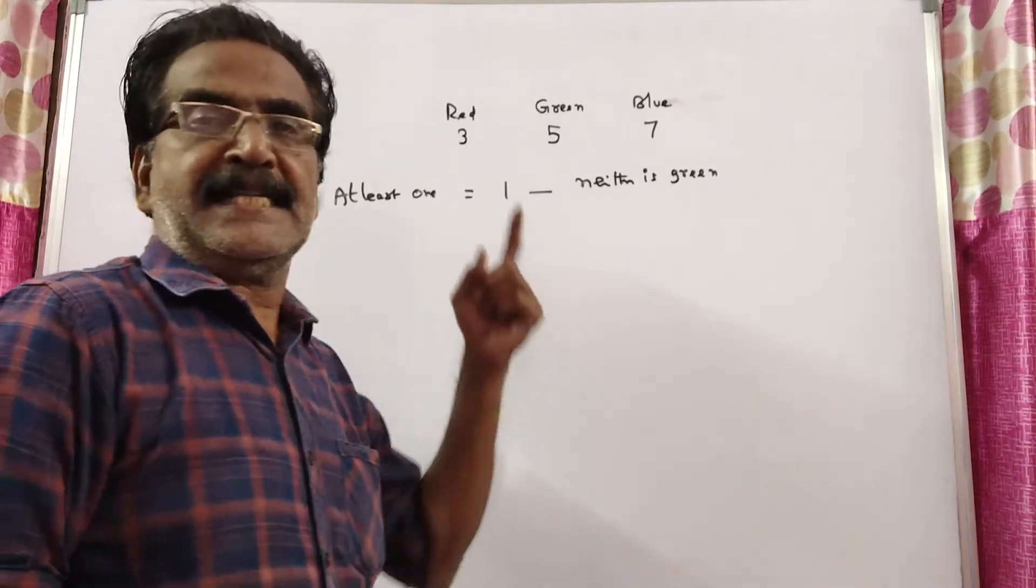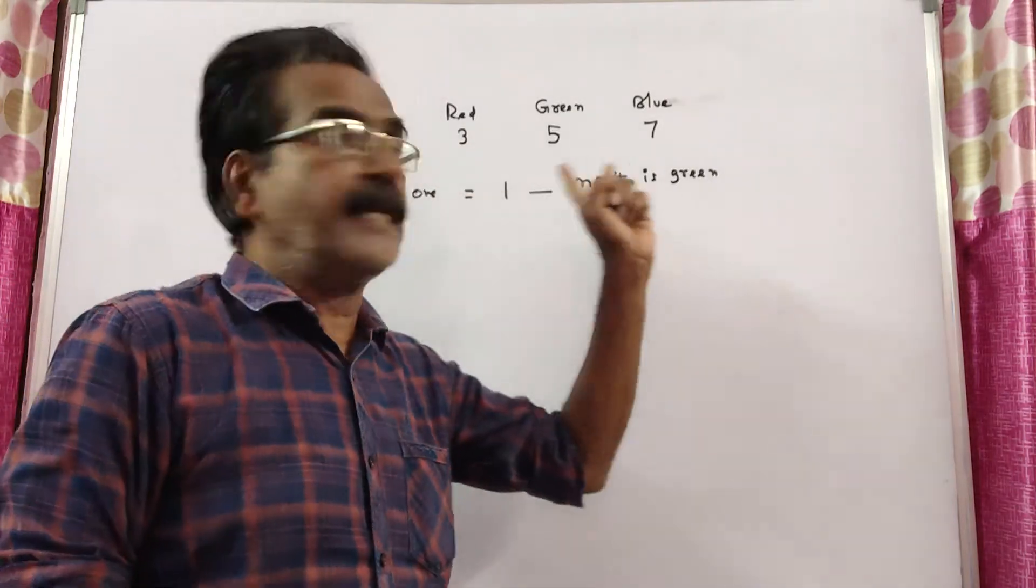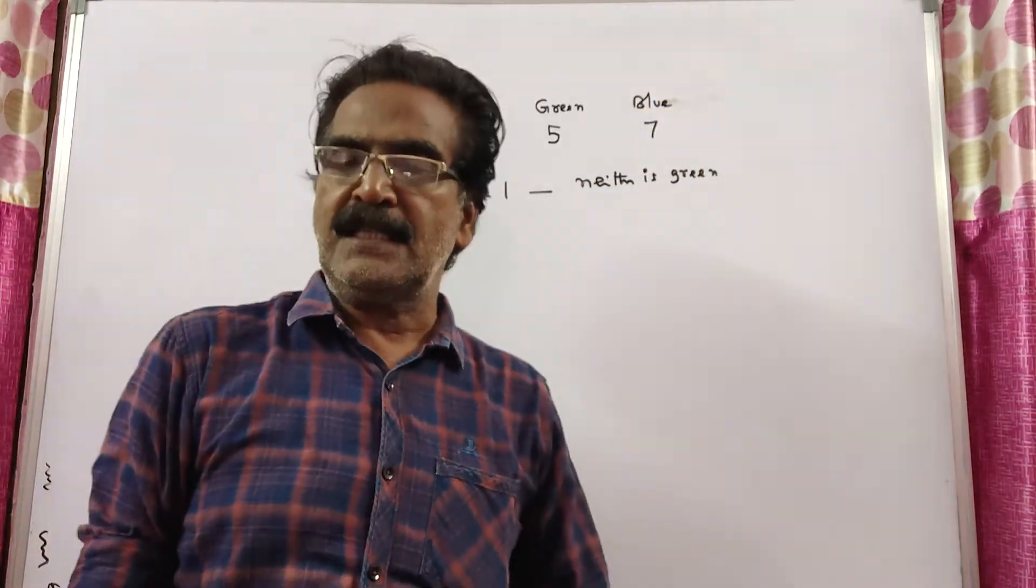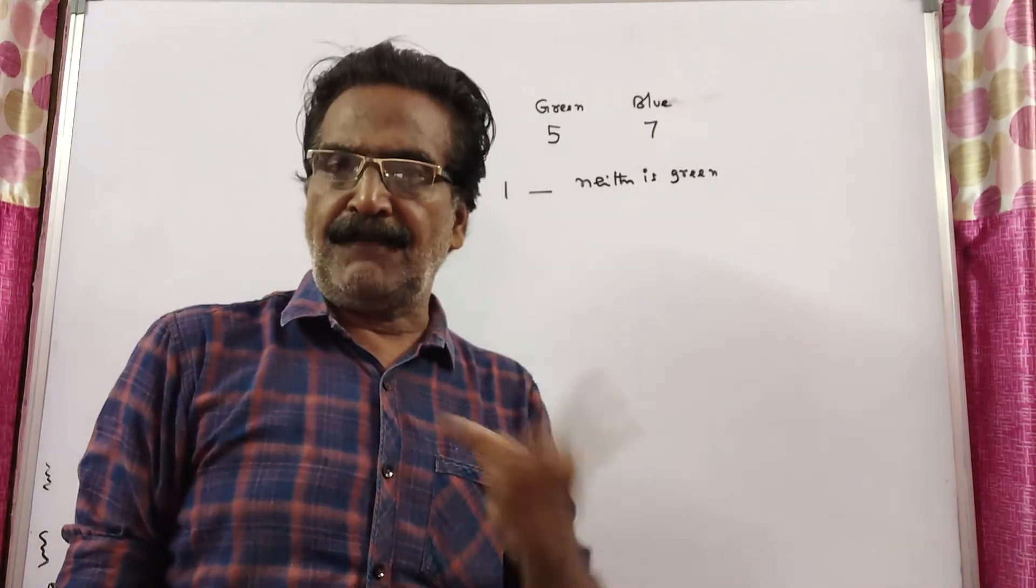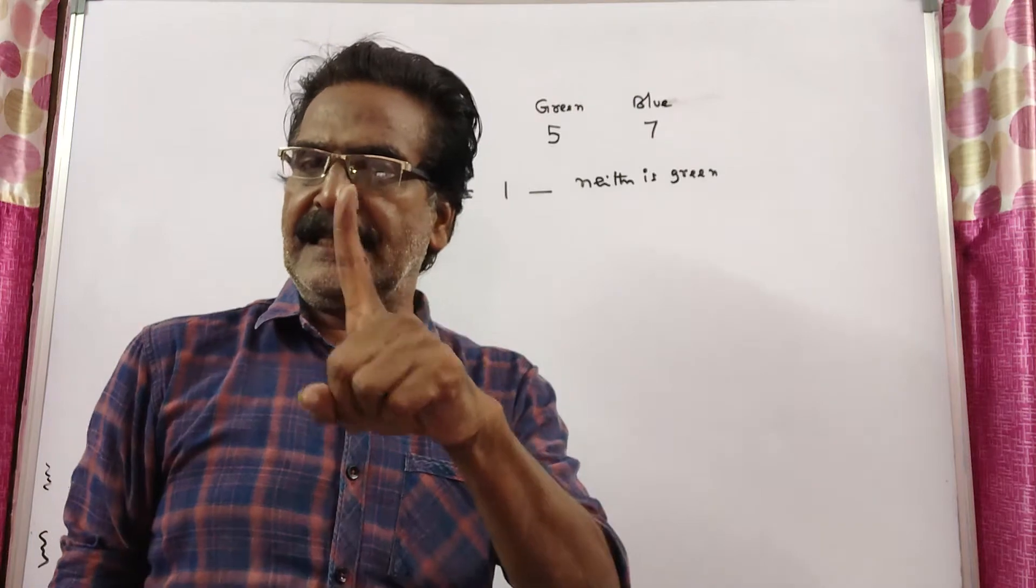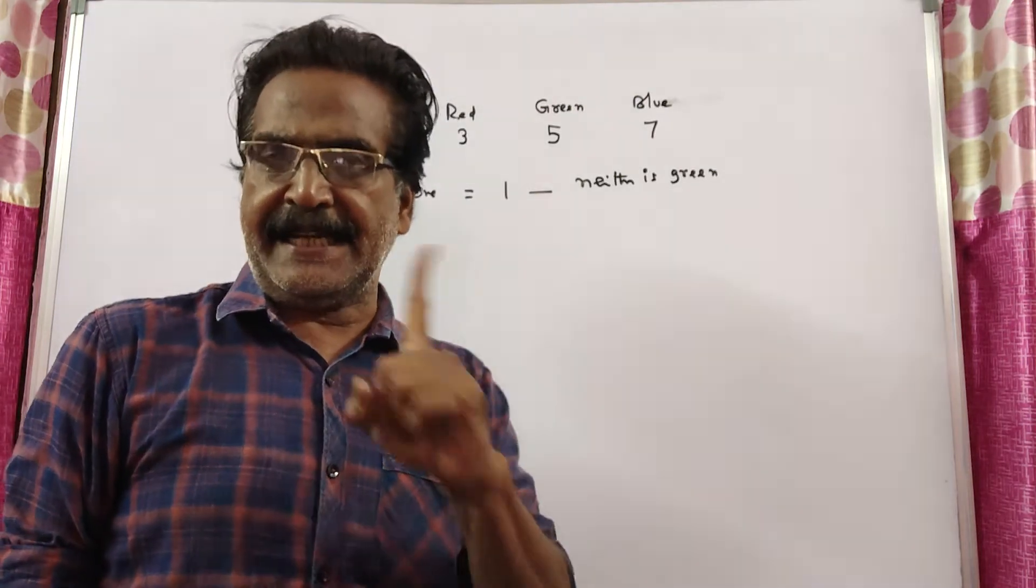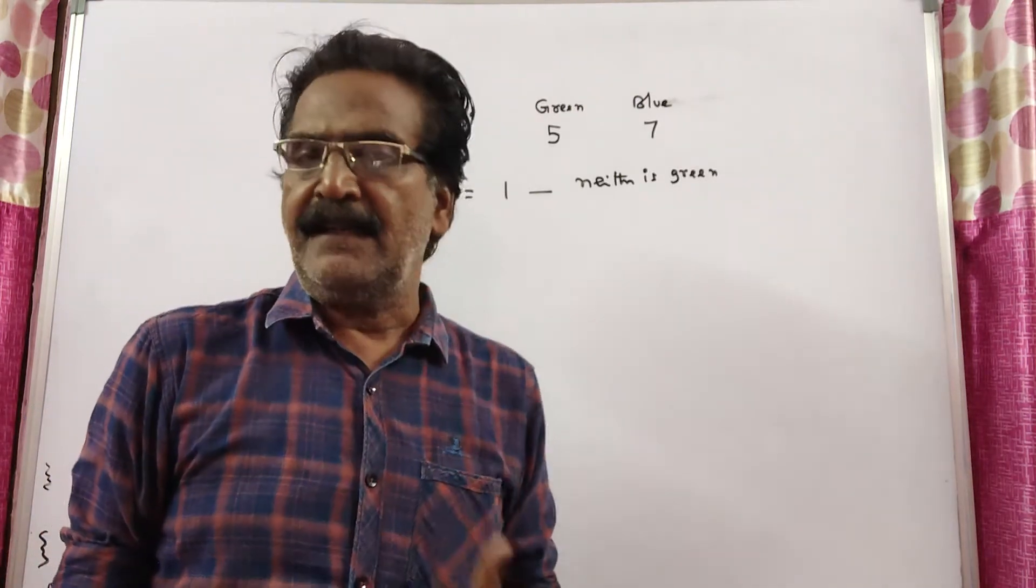See friends, a bag contains 3 red, 5 green, and 7 blue balls. 2 balls are drawn at random. What is the probability that at least 1 is green?